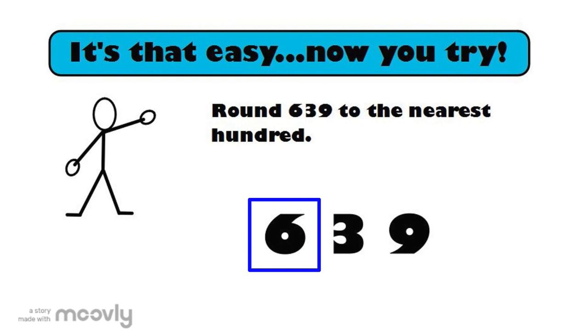Step two, cross all the numbers out behind the box. So, we will cross out the three and the nine. The next step, turn those numbers into zeros. So, let's put a zero above the three and the nine.